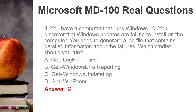Question 4. You have a computer that runs Windows 10. You discover that Windows updates are failing to install on the computer. You need to generate a log file that contains detailed information about the failures. Which cmdlet should you run? A. Get-LogProperties. B. Get-WindowsErrorReporting. C. Get-WindowsUpdateLog. D. Get-WinEvent. Answer: C.